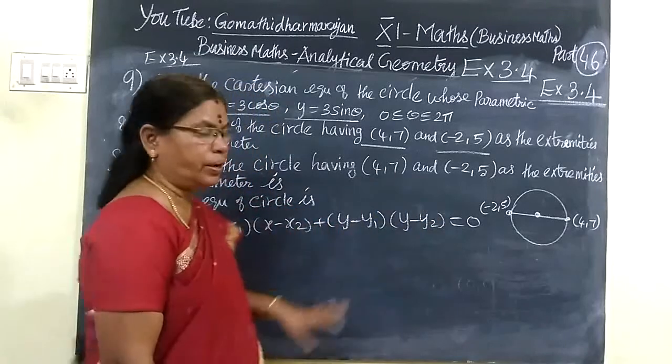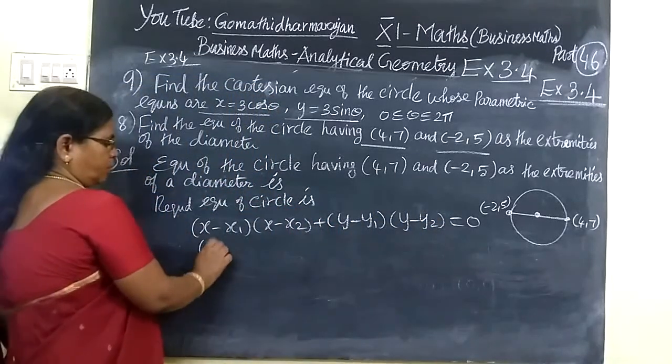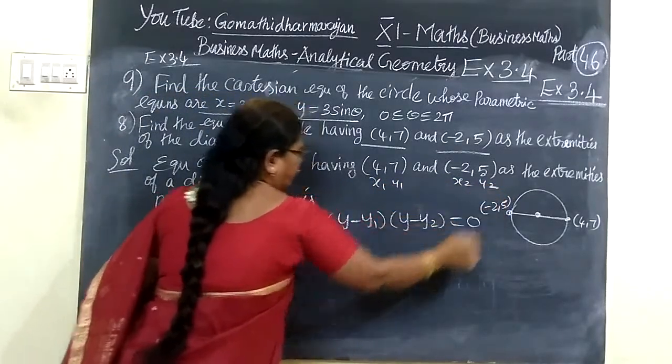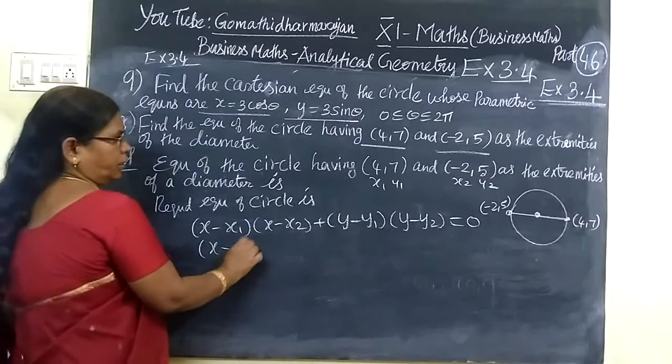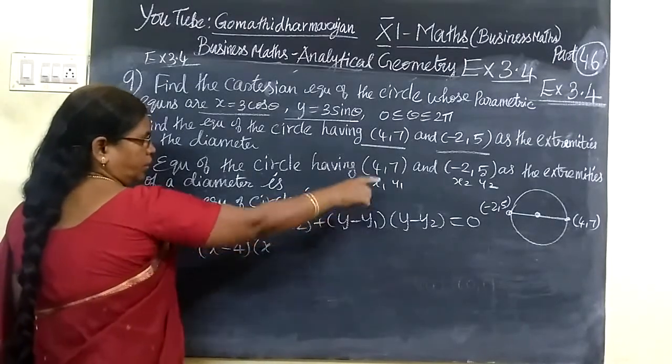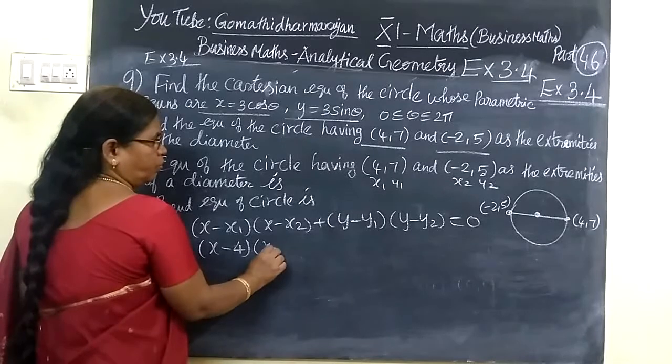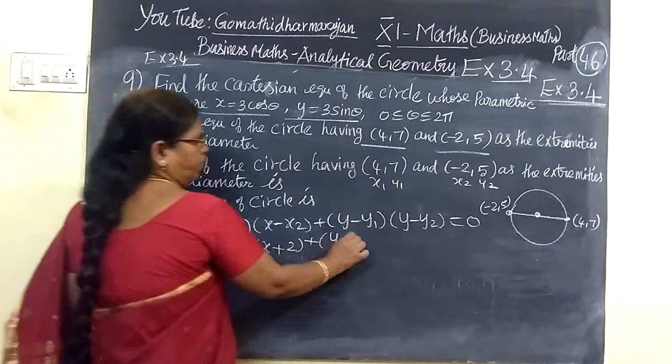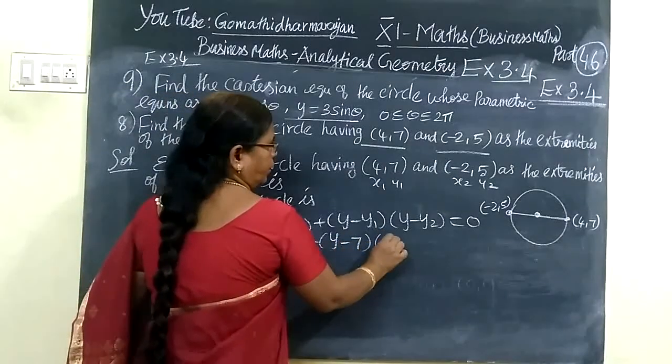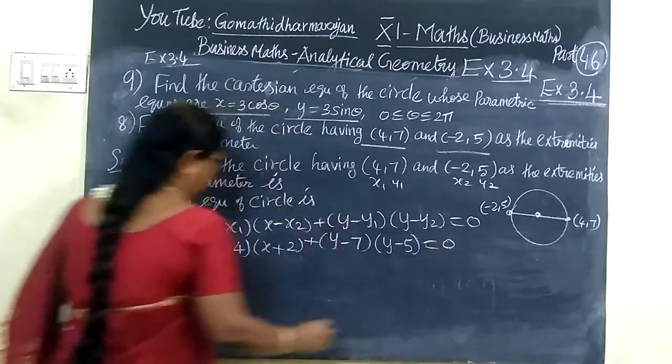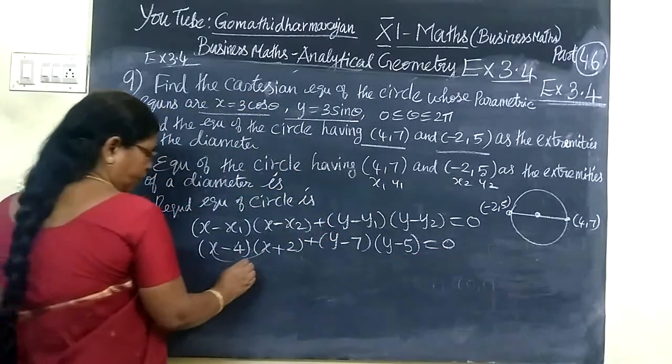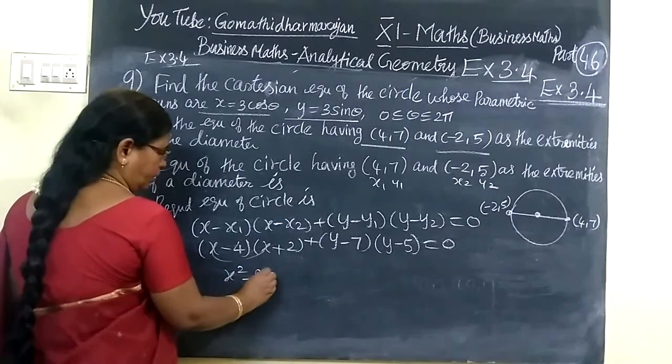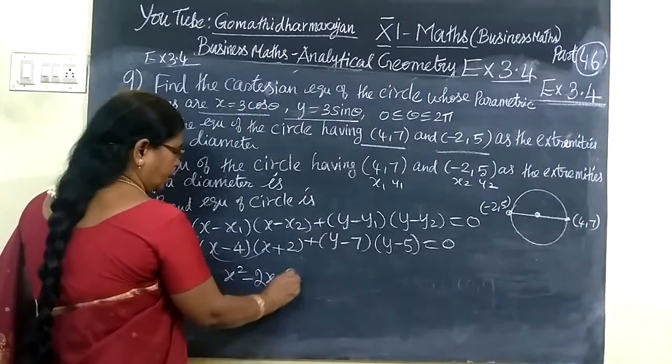So you substitute x minus. Now we have x1, y1. Now x2, y2 is equal to 4. So in this way, 4. Then x minus x1 is minus 2. Then y minus y1 bracket, y minus y2 equal to 0.